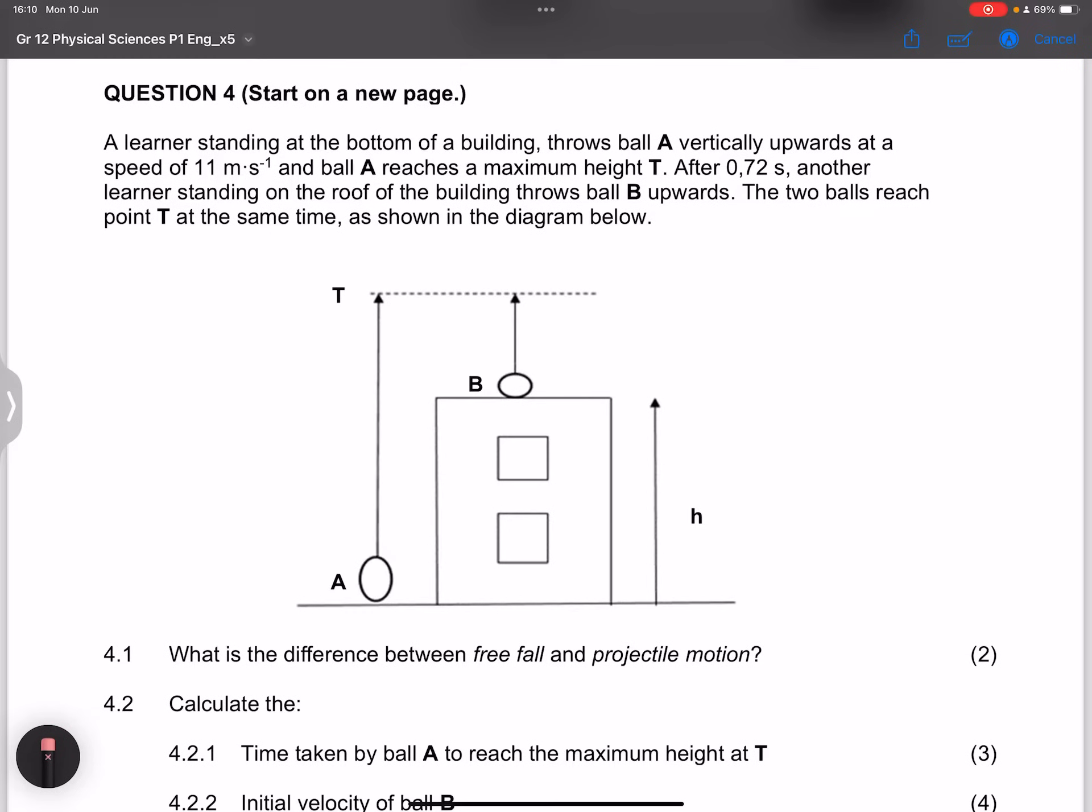So we move on to question four. They say a learner standing at the bottom of a building throws ball A vertically upwards at a speed of 11 meters per second. I might as well just put in that information.